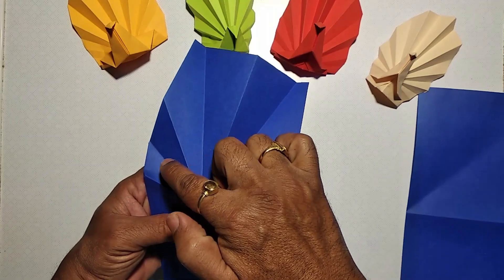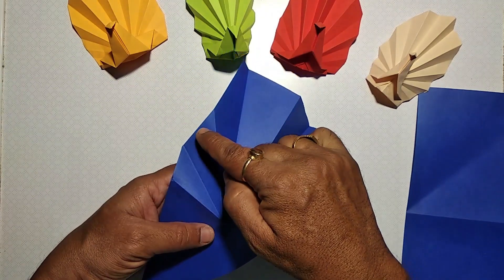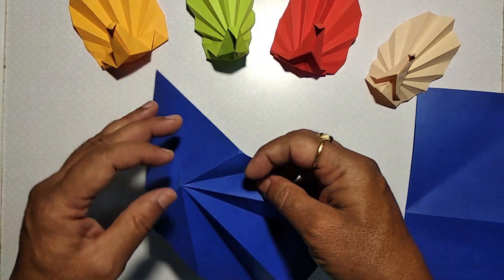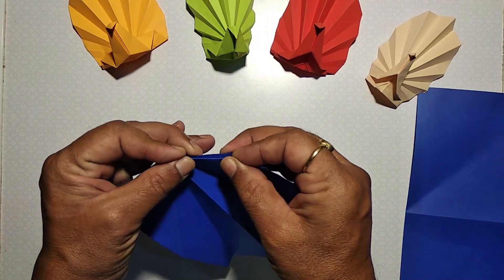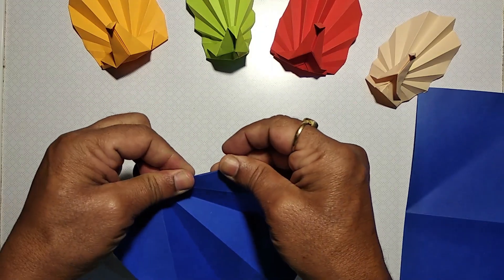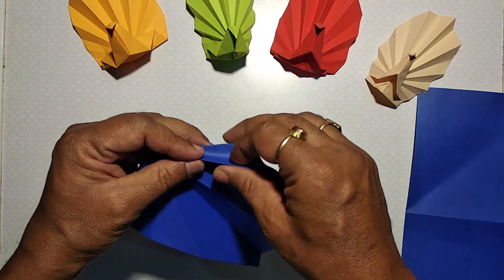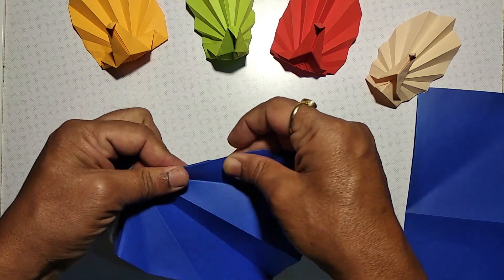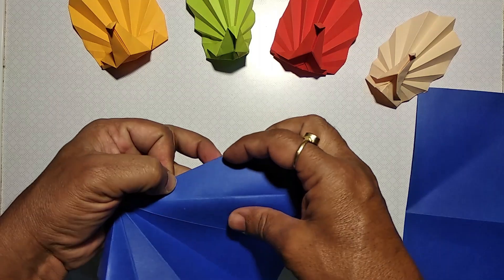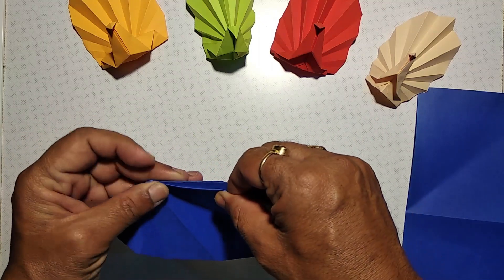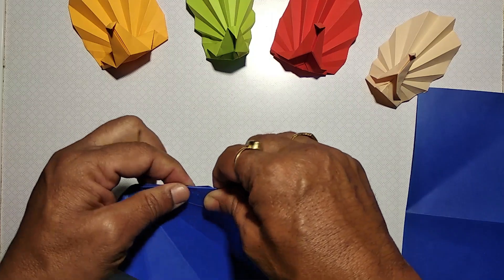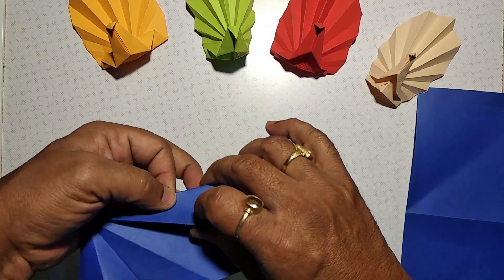Bisect all these angles further in this way. Again, all these creases will be alternately mountain fold and valley fold.